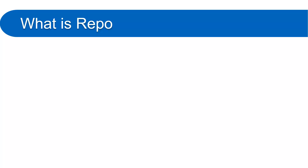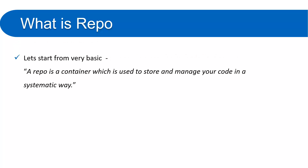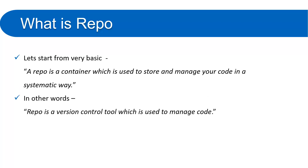First thing first, let's understand what is repo. Repo means repository — you can say either repo or repository, both are the same thing. In very basic terms, a repo or repository is a container which is used to store and manage your code in a systematic way. Since we are talking about Azure Repo, this container is available on the server of Azure DevOps, and all your code with all the details about all the changes is available there.